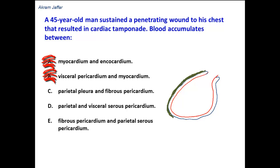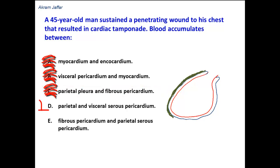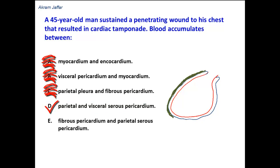The visceral layer and parietal layers of the serous pericardium — option C: parietal pleura and fibrous pericardium? No, because this is not the location of the pericardial cavity. Option D: parietal and visceral serous pericardium — this is the correct option. Parietal and visceral layers of the serous pericardium.